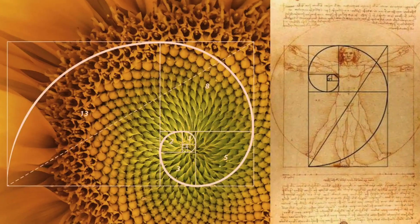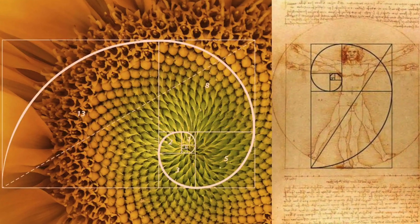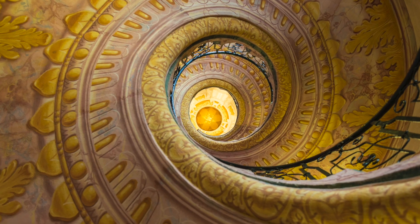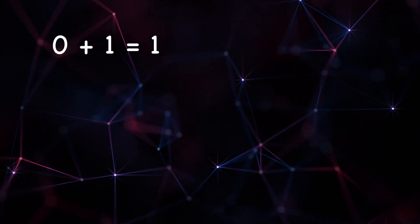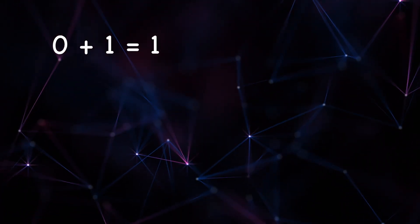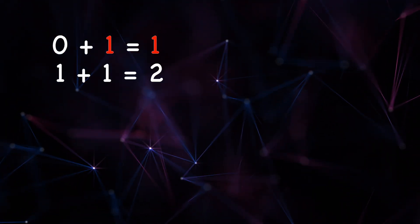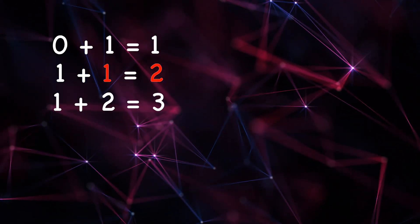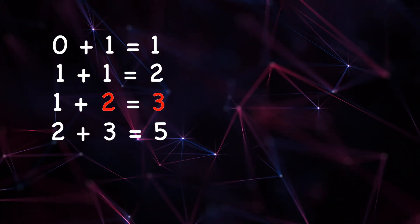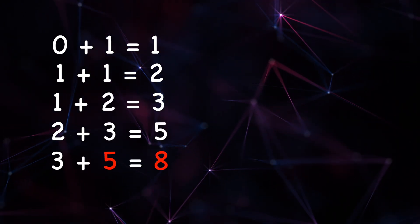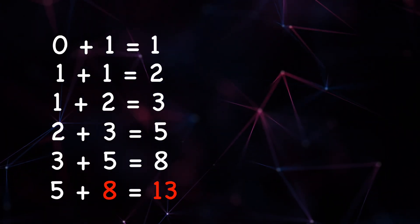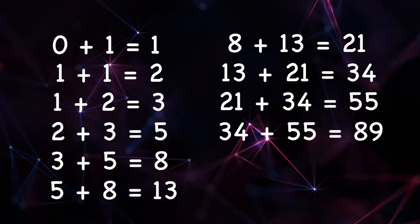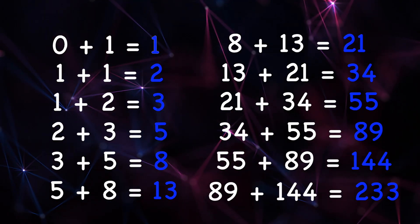The Fibonacci sequence was a development from the golden ratio. A simple way of creating this formula is taking the last two numbers: 0 plus 1 equals 1, 1 plus 1 equals 2, 1 plus 2 equals 3, 2 plus 3 equals 5, and so on. This sequence will remain consistent as the number maintains the ratio of 1 to 1.6.